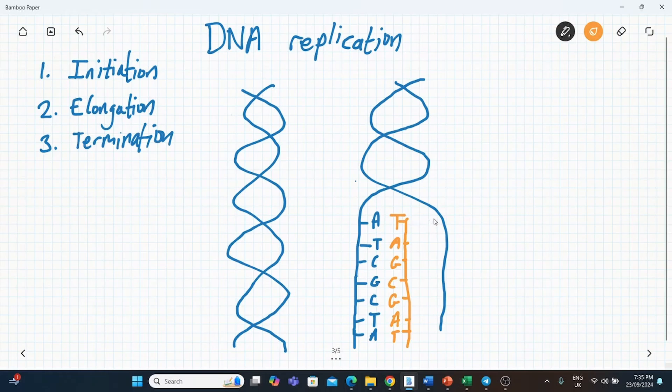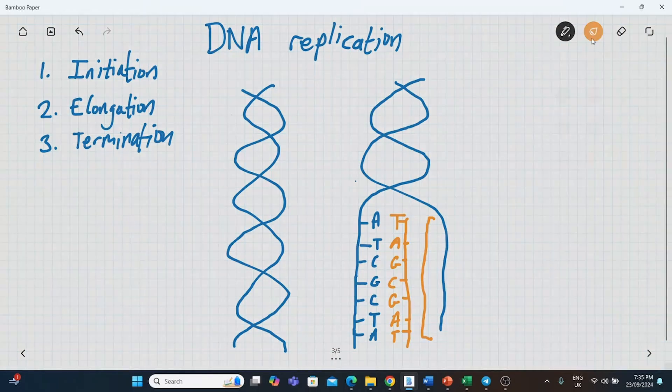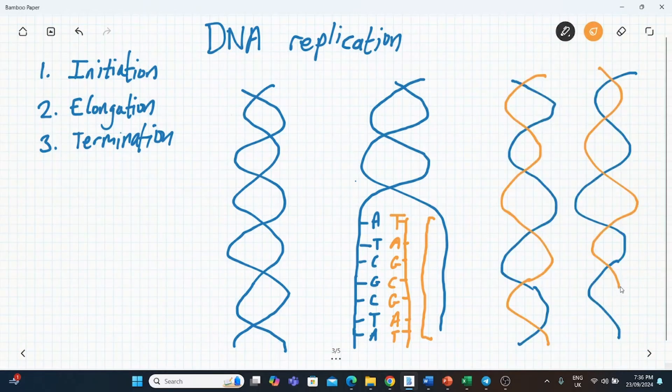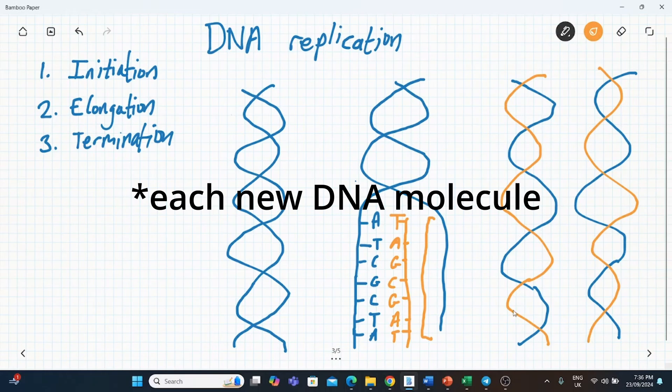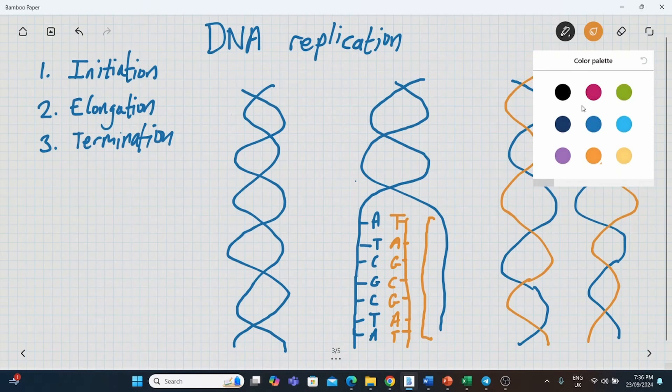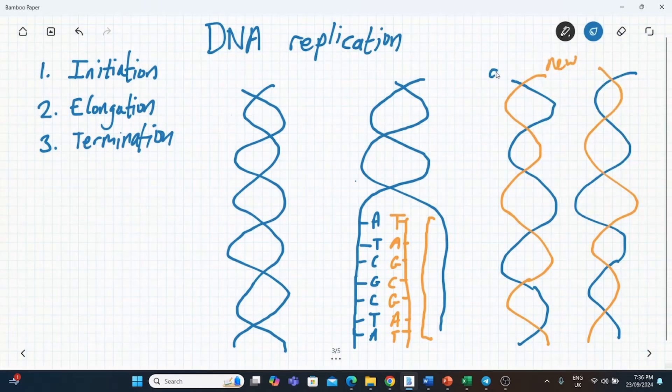So let's just draw it like this. And of course the same happens on this side as well. This is called elongation because you're adding DNA bases onto the unzipped part of the DNA. And eventually you end up with a situation like this.